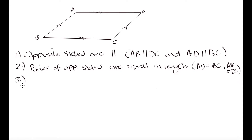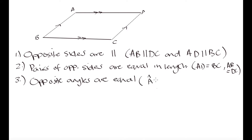The third property is that opposite angles are equal. That means angle A is going to be equal to angle C, and angle B is equal to angle D. Now I'm going to take a moment to prove that these properties are true.